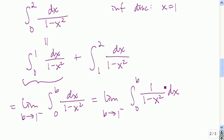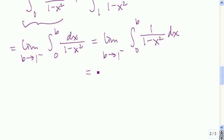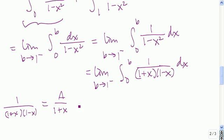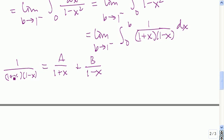To evaluate this integral, we're going to use partial fraction decomposition. We rewrite it by factoring the denominator as 1 plus x times 1 minus x. So we decompose 1 over (1 plus x)(1 minus x) as A over 1 plus x plus B over 1 minus x. Multiplying both sides by (1 plus x)(1 minus x), we get 1 equals A times (1 minus x) plus B times (1 plus x).